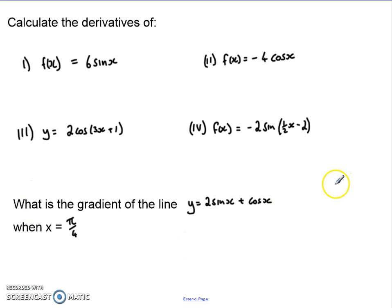And then an application style question: what is the gradient of the line y equals 2 sine x plus cos x when x is equal to pi over 4? So we had to calculate those.